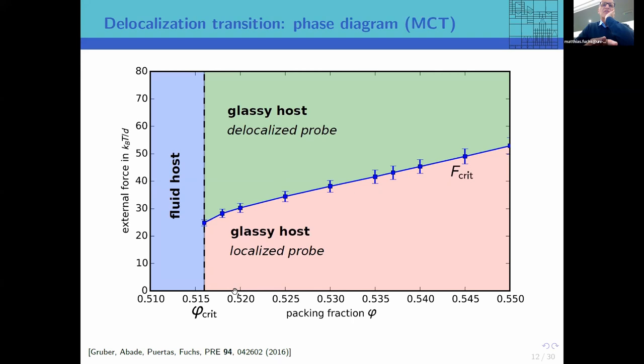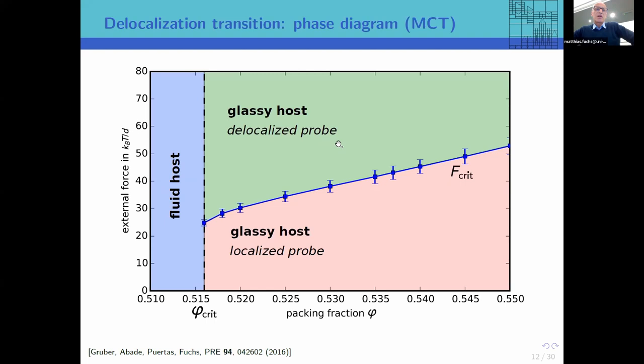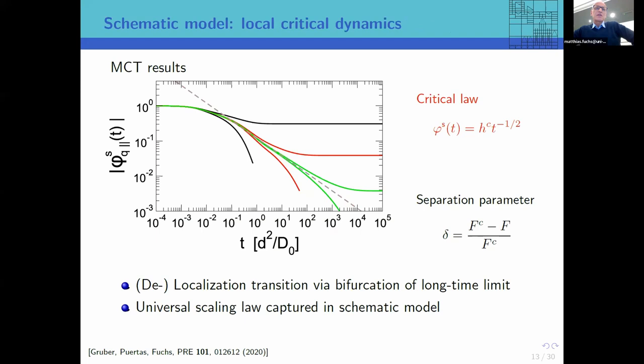There is a phase diagram; let me focus on the glassy regime, with packing fraction above φ_critical — the glass transition density. In red, a small force regime where the particle stays localized. If the force exceeds a critical threshold — the blue line — the particle gets delocalized. I want to show experiments from Frank Scheffold's group in Fribourg on how particles move when they get delocalized in this regime; there is critical dynamics that we analyzed.